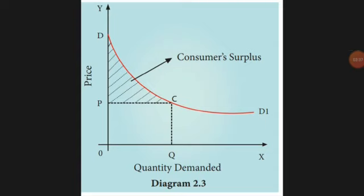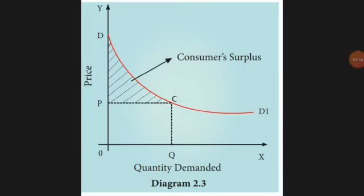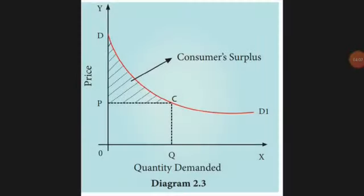In the diagram, the shaded part represents the consumer surplus. The X-axis is the amount demanded and the Y-axis is the price or income. The rectangle OPCQ represents price into quantity — the actual amount paid. The area above that, the triangle DPC, is the extra shaded portion — that is the consumer surplus.